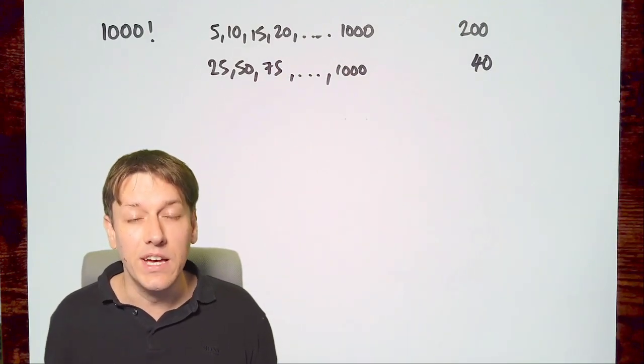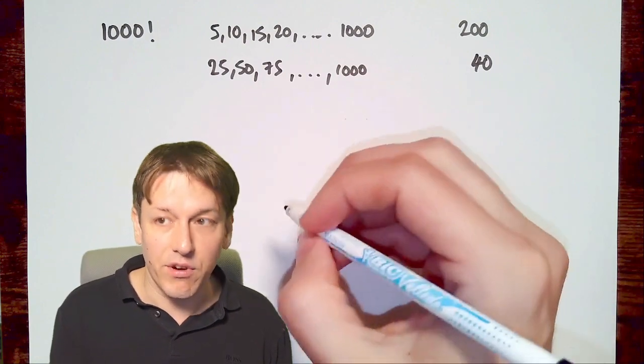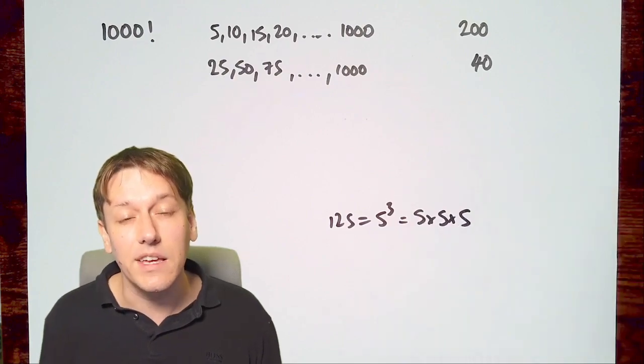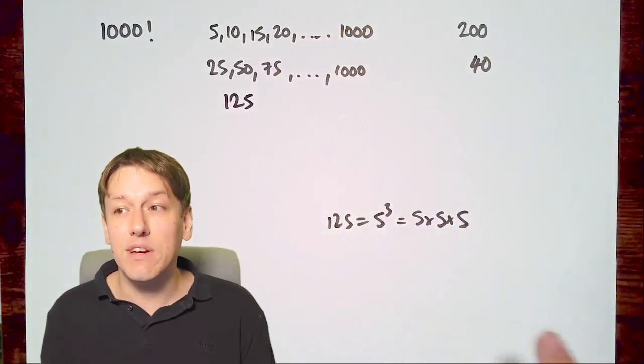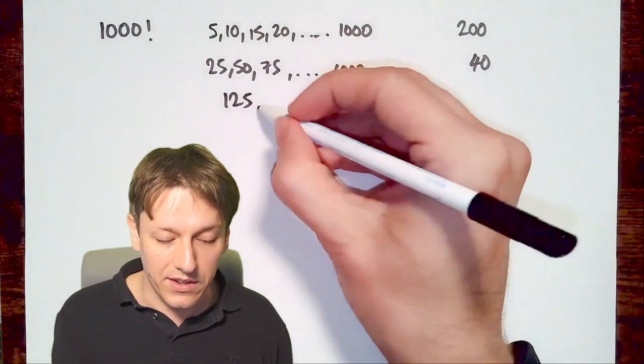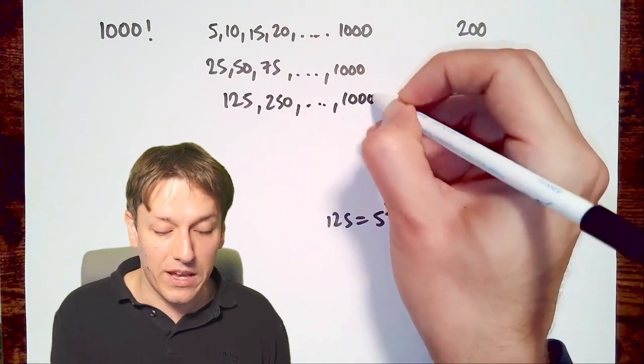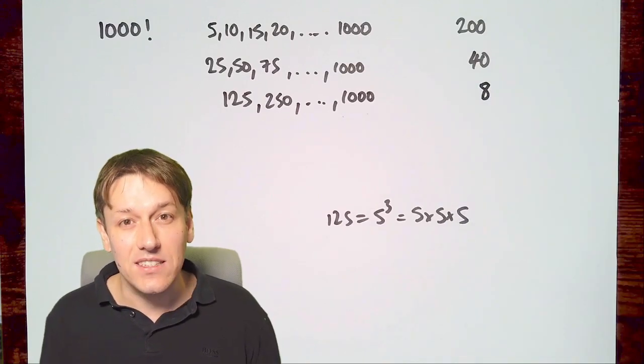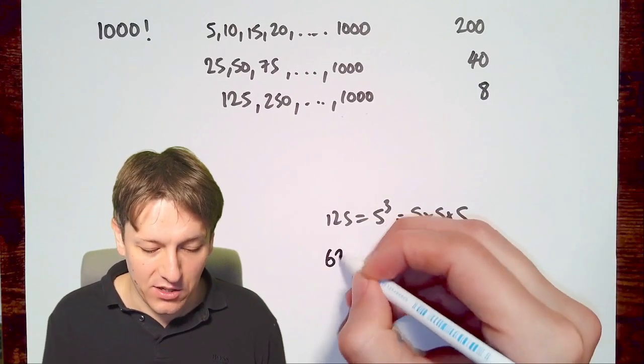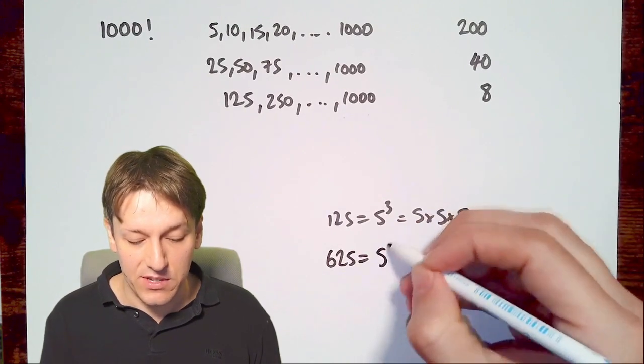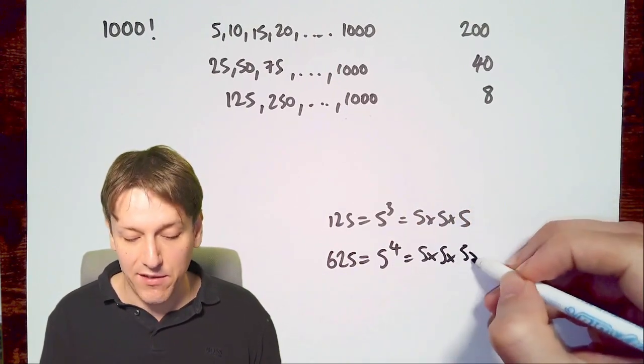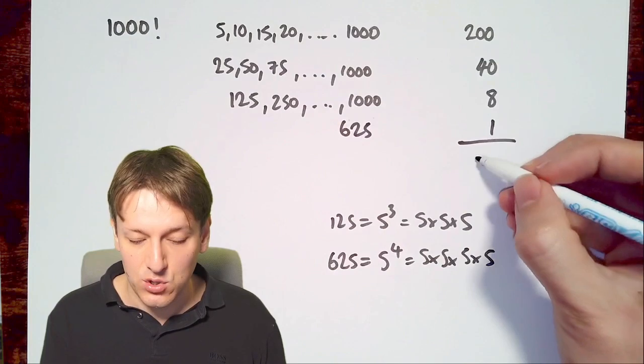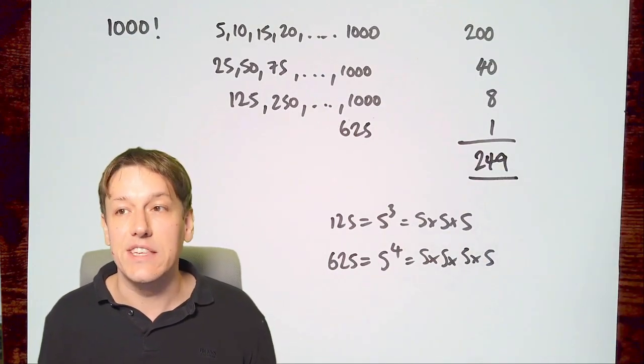But we need to go even further, because there are times when we get more than two zeros. 125, that's 5 cubed, or 5 times 5 times 5. Well, every time I hit one of those, I'm going to get three extra zeros, because I compare each of those fives with an even number. 125, 250, all the way up to 1000 will give us those. 1000 divided by 125 is 8, so that gives us 8 additional zeros. There's even one more, because we can go to one higher power, which is 625, which is 5 to the 4. In this case, we're going to get four additional zeros, so I need to add one extra one on here, and that gives us 249 zeros on the end of 1000 factorial.